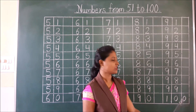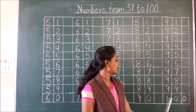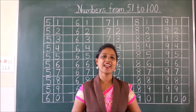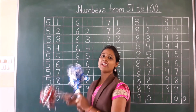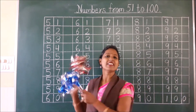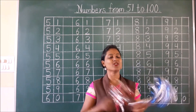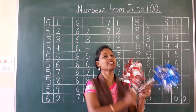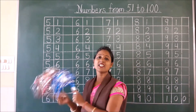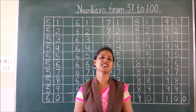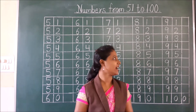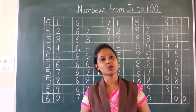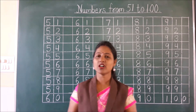That is 1-0-0, 100. 1-0-0, 100. Now we will cheer and count again: 91, 92, 93, 94, 95, 96, 97, 98, 99, 100.